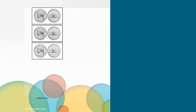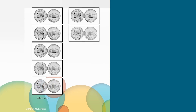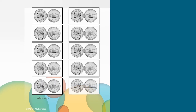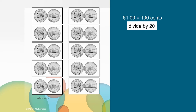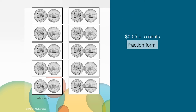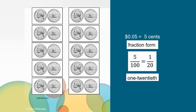20 nickels are equivalent to a dollar. So what fraction and decimal would we write to show the relationship of one nickel to one dollar? We know that one dollar is equal to 100 pennies or 100 cents and that 20 nickels equals a dollar, so I need to divide both sides by 20 and that gives me 5 cents. The fraction of this relationship looks like this in number and word form. Five hundredths represents the five cents out of 100 cents and that is equivalent to five hundredths or one twentieth.